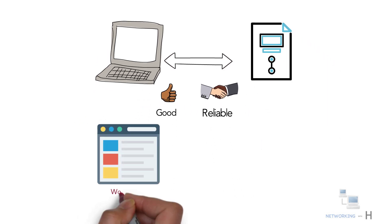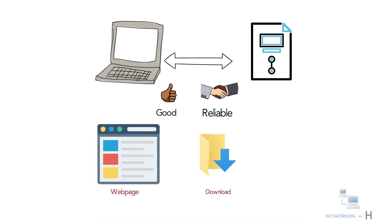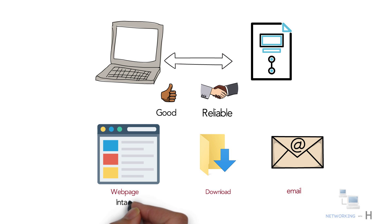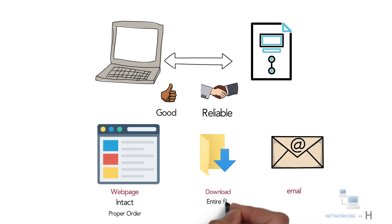For example, when you view a web page, download a file, or look at an email, you would expect the web page to be intact and in proper order with nothing missing. Or if you were downloading a file, you would want the entire file and not just part of it, because if any of the data is missed or out of order, then it is of no use. This is where TCP comes into the picture.